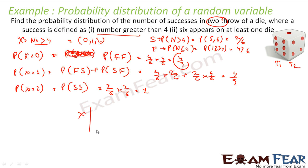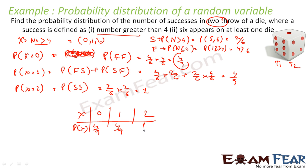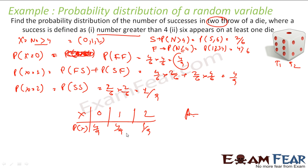So if you see the probability distribution, x can be 0, 1, 2, and the probability values are: for 0 it is 4 by 9, for 1 also 4 by 9, and for 2 it is 1 by 9. That is the answer. If you add all: 4 + 4 + 1 = 9, so 9 by 9 equals 1.